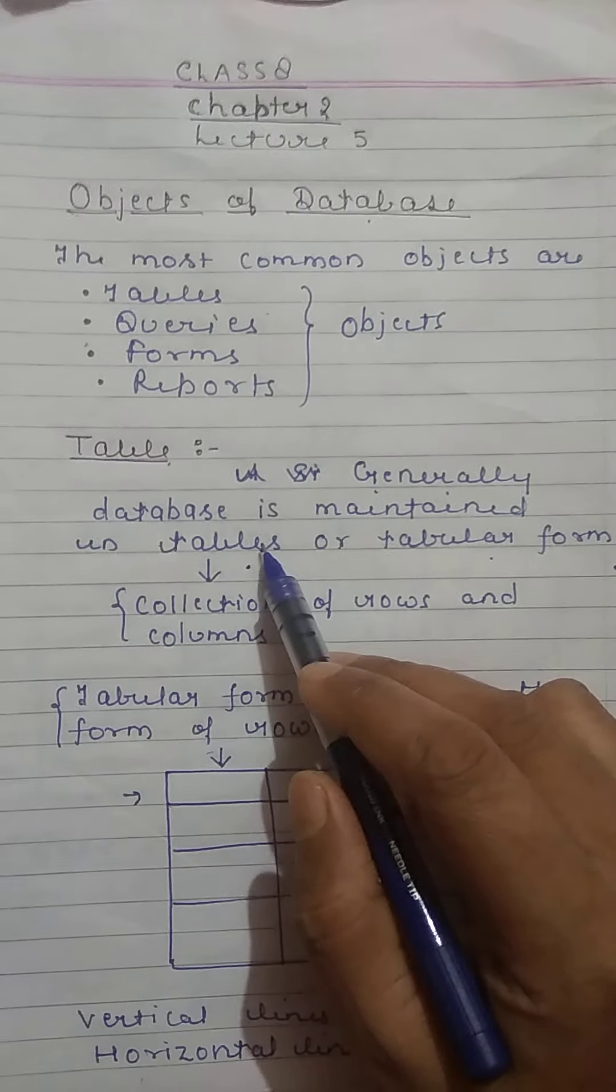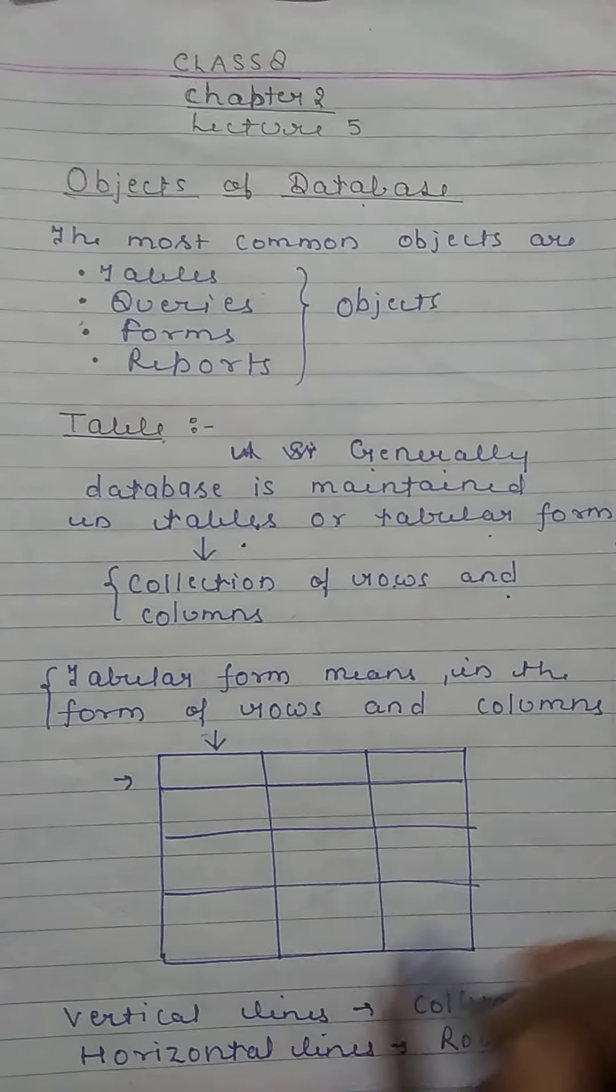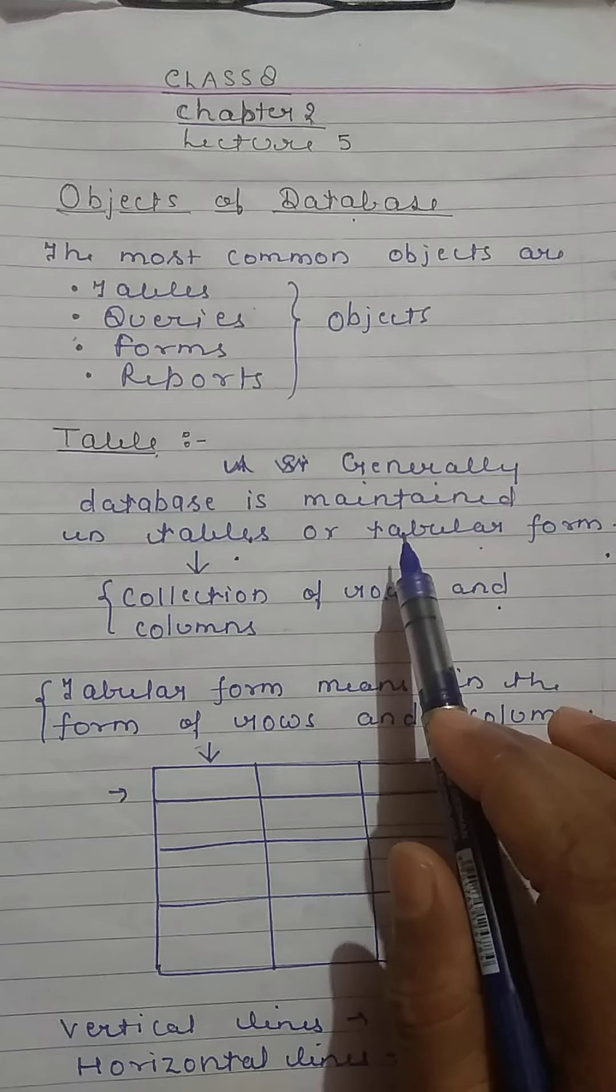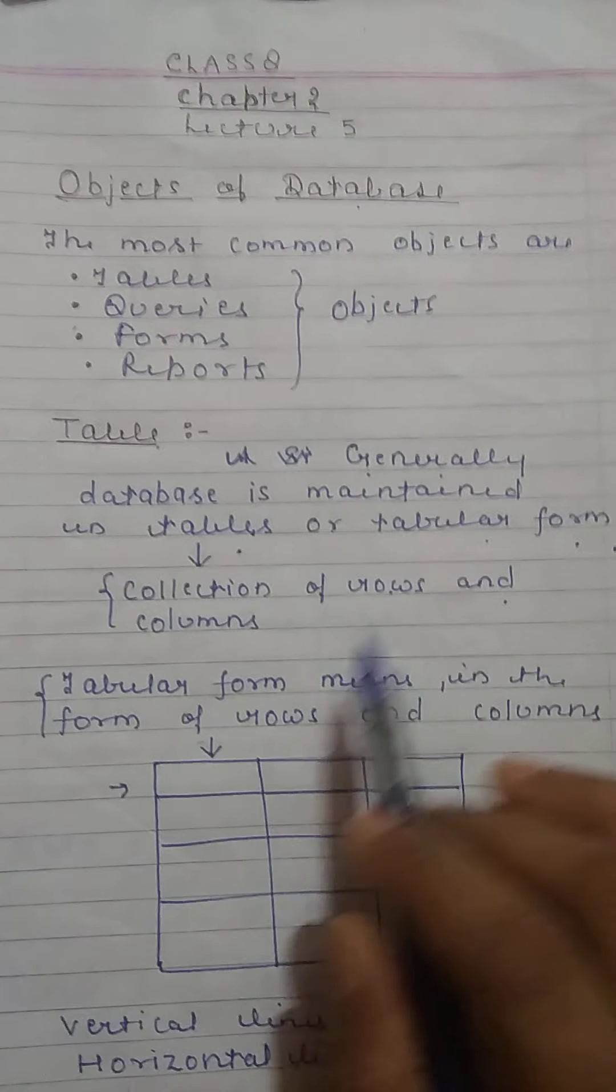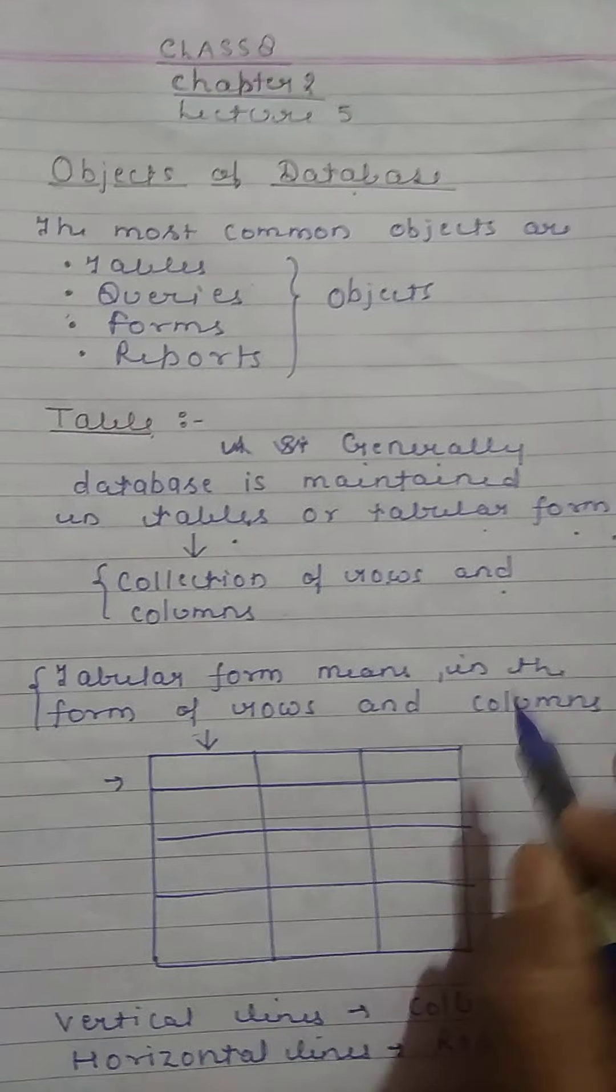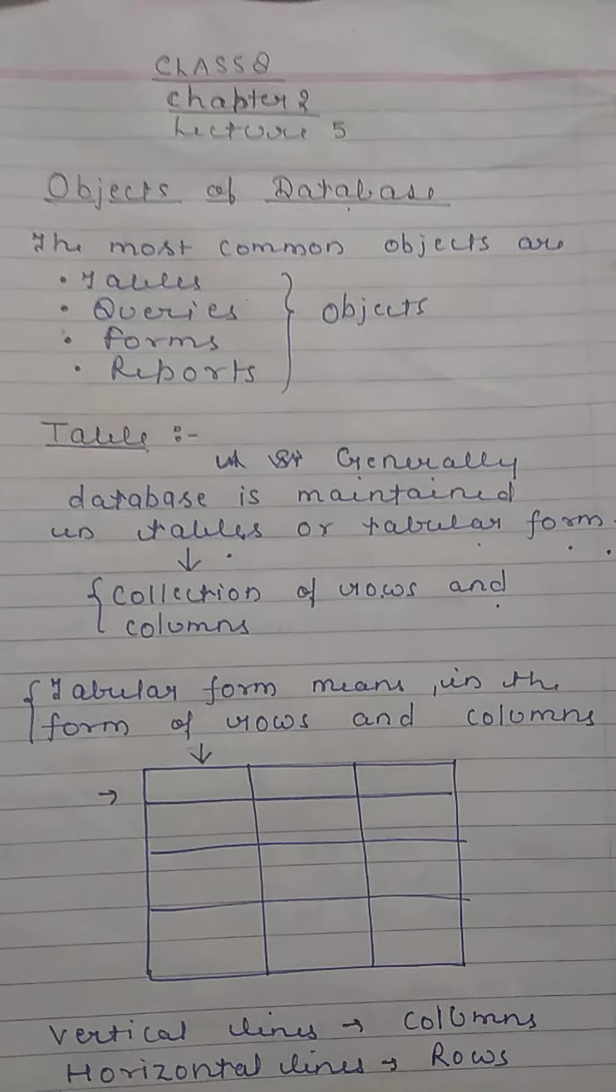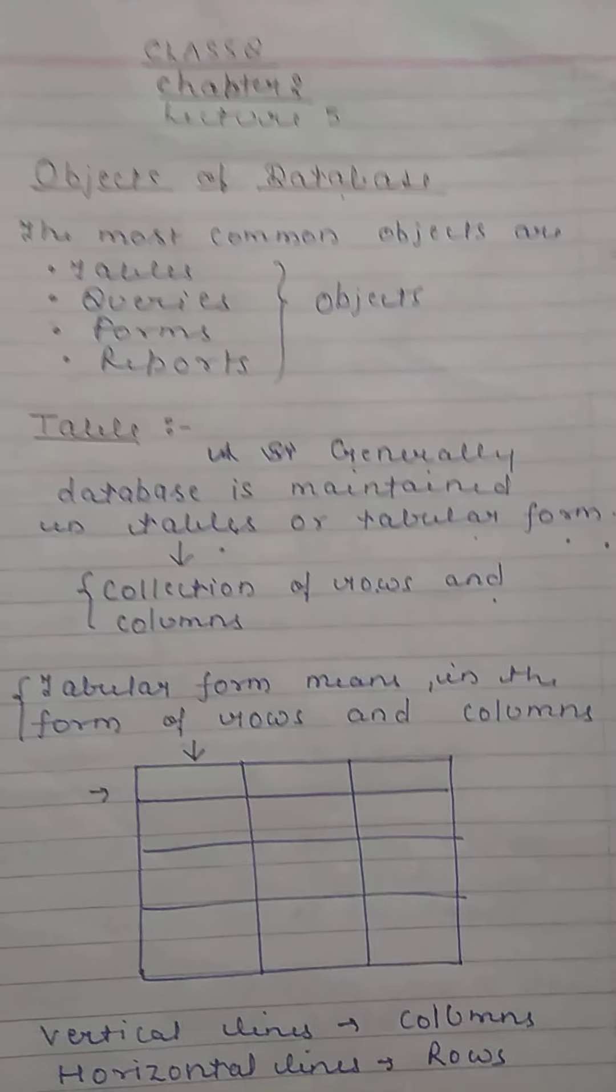What is table? Table is collection of rows and columns. And what is the meaning of tabular form? Tabular form means in the form of rows and columns. If we are maintaining data in the form of rows and columns, then this is called tabular form.